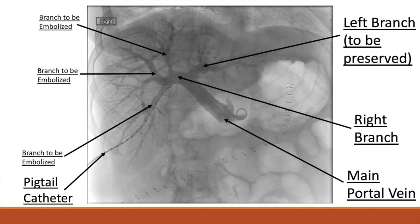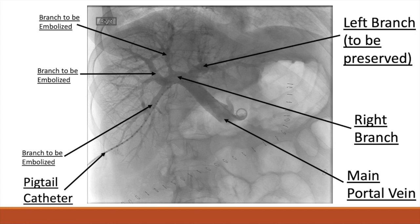A transitional dilator system such as AccuStick is used to transition from a 0.018 wire to a 0.035 wire. Once this wire is in place, we exchange the transitional dilator system for a 6 French vascular sheath and then place a 5 French pigtail catheter. The purpose of this catheter is portal venography, performed to assess portal venous anatomy and identify portal vein branches to embolize or spare. In this image, we see the pigtail catheter leaving the vascular sheath and traversing the right branch of the portal system to enter the main portal vein, from which contrast is released to flow into the portal system.